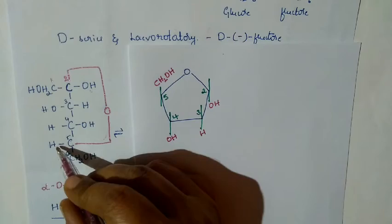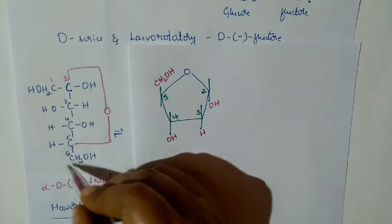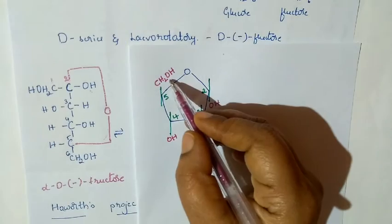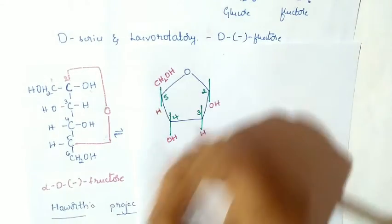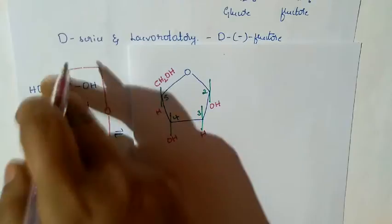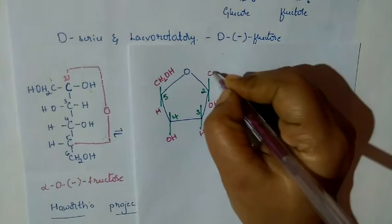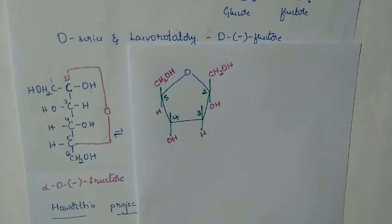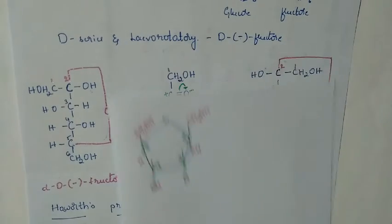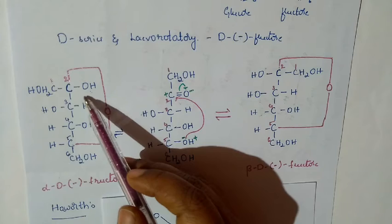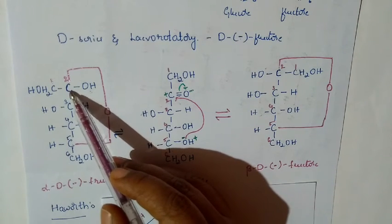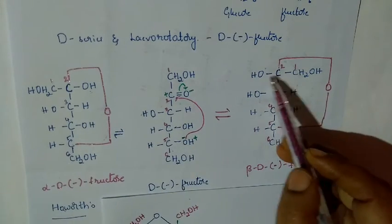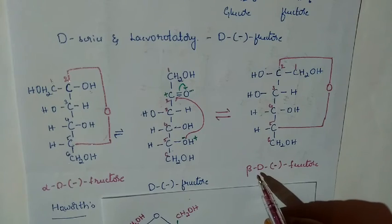For the fifth carbon, one side has hydrogen and another side has CH₂OH, so CH₂OH (the sixth carbon) will always be above, and hydrogen is below. For the first carbon, it is different from the sixth, because we have alpha and beta forms. If OH is on the right side, it is the alpha form; if OH is on the left side, it is the beta form.